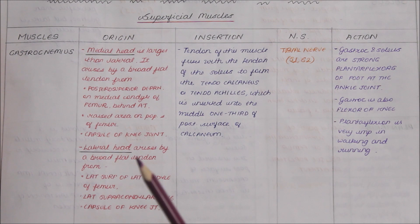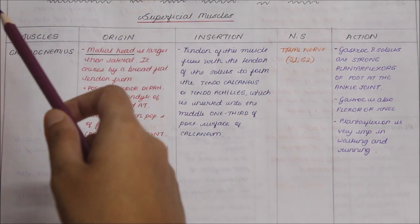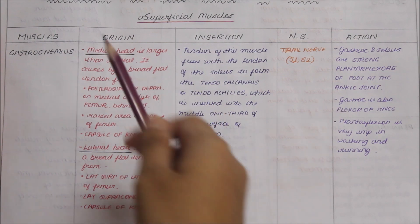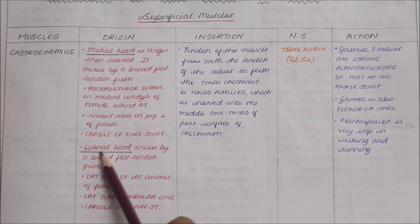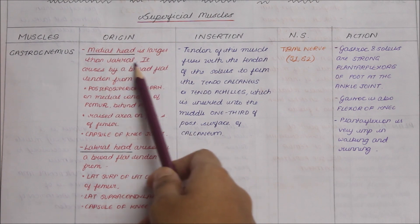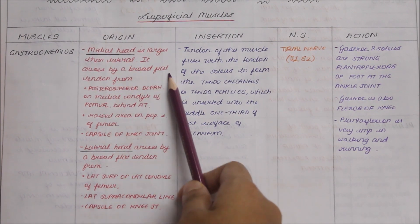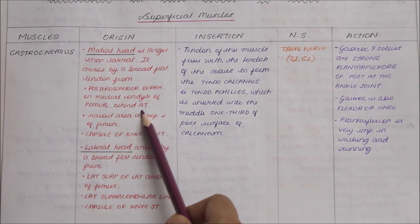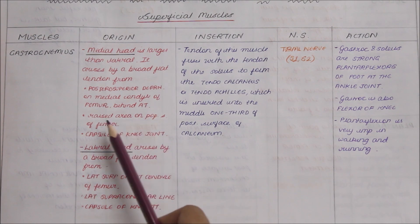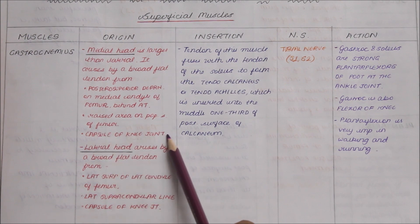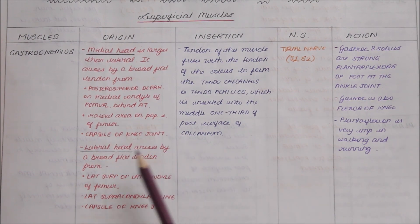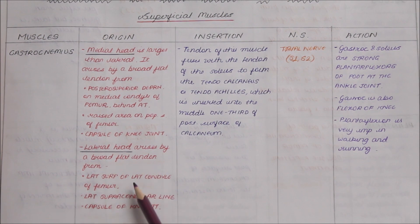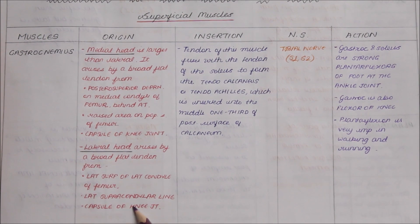Looking at these muscles in detail, we will begin with the superficial muscles. The gastrocnemius has two heads of origin: the medial head and the lateral head. The medial head is larger than the lateral head. It arises by a broad flat tendon from the postero-superior depression on the medial condyle of the femur, behind the adductor tubercle, a raised area on the popliteal surface of the femur, and the capsule of the knee joint. The lateral head arises by a broad flat tendon from the lateral surface of the lateral condyle of the femur, the lateral supracondylar line, and the capsule of the knee joint.